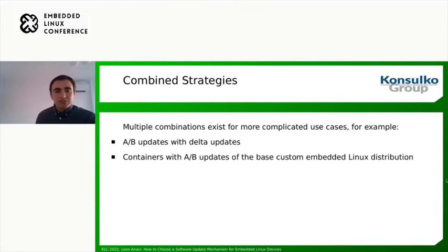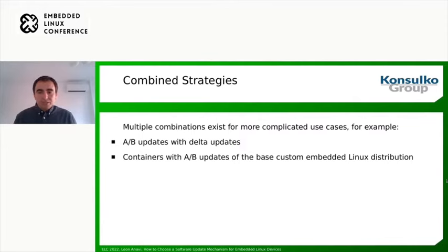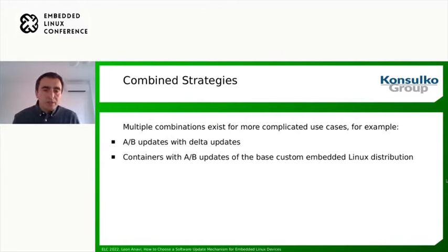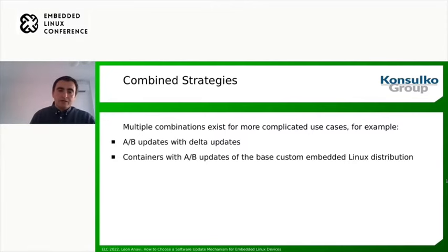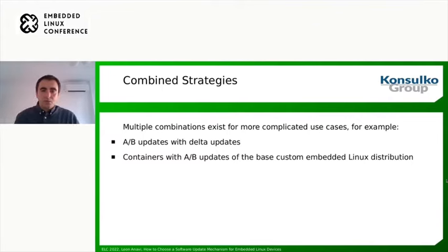Speaking about combined strategies, this is a hot topic nowadays because multiple combinations exist for more complicated use cases. For example, we can have A-B updates combined with delta updates — that way we always have a second partition known to work. Another combination is containers with A-B updates for the base embedded Linux distribution. The advantage of this approach is that we can have a really small embedded Linux distribution capable of running containers, with all apps running in containers. This is increasingly preferred by application developers who can isolate their apps, do all QA there, and ensure applications work exactly as intended.